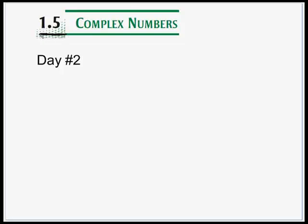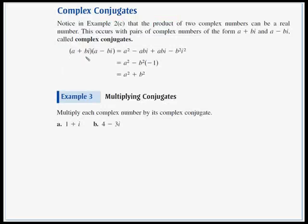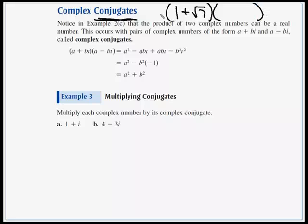In this video, we'll finish up section 1-5, complex numbers. We're going to talk first about complex conjugates. If we have the number 1 plus the square root of 7, we would want to multiply that by its conjugate to get rid of the radical. The conjugate has the same terms — the 1 and the root 7 — but the sign changes from plus to minus. When we FOIL it out, there is no middle term, and the square root of 7 will be gone.